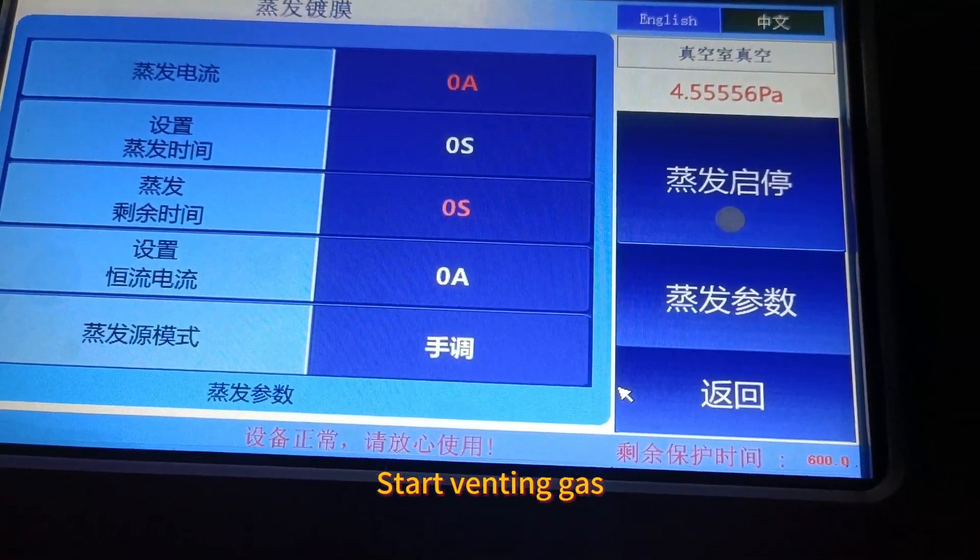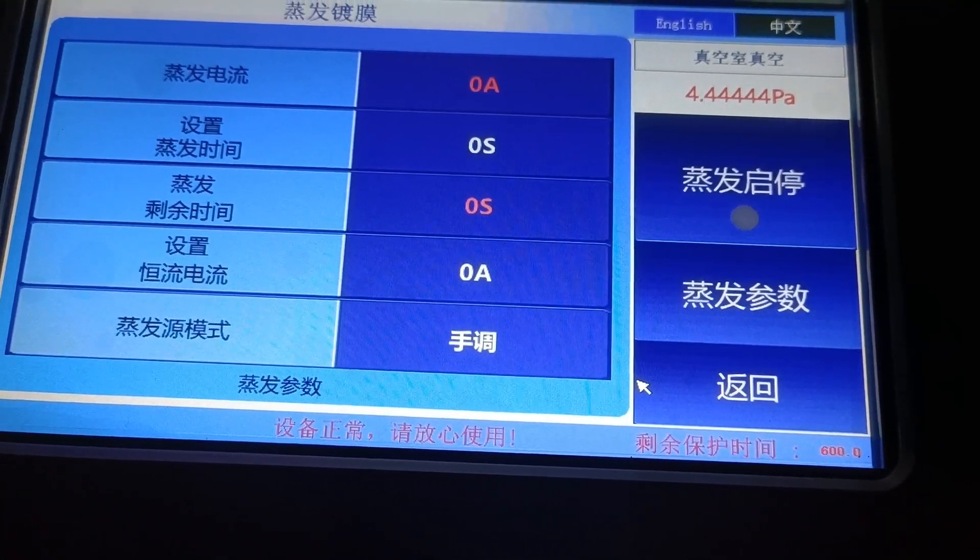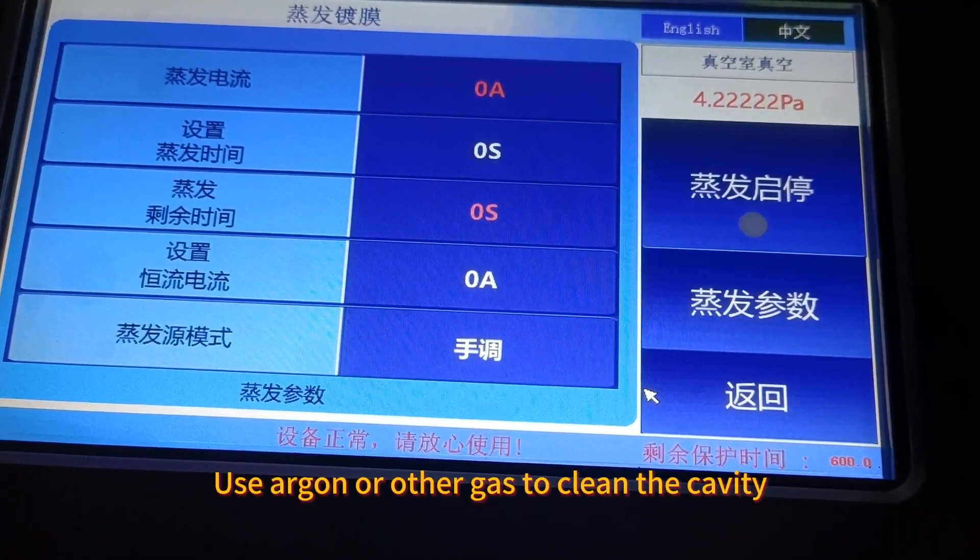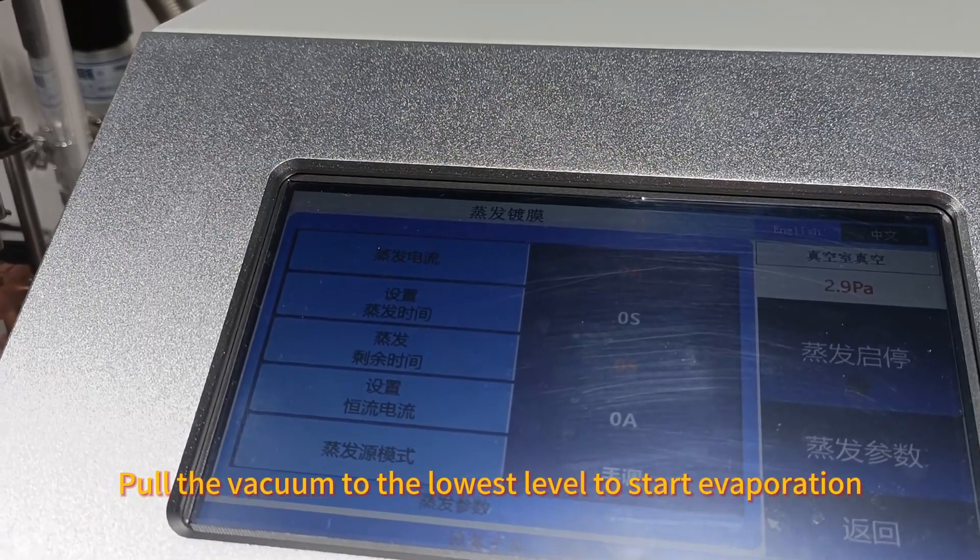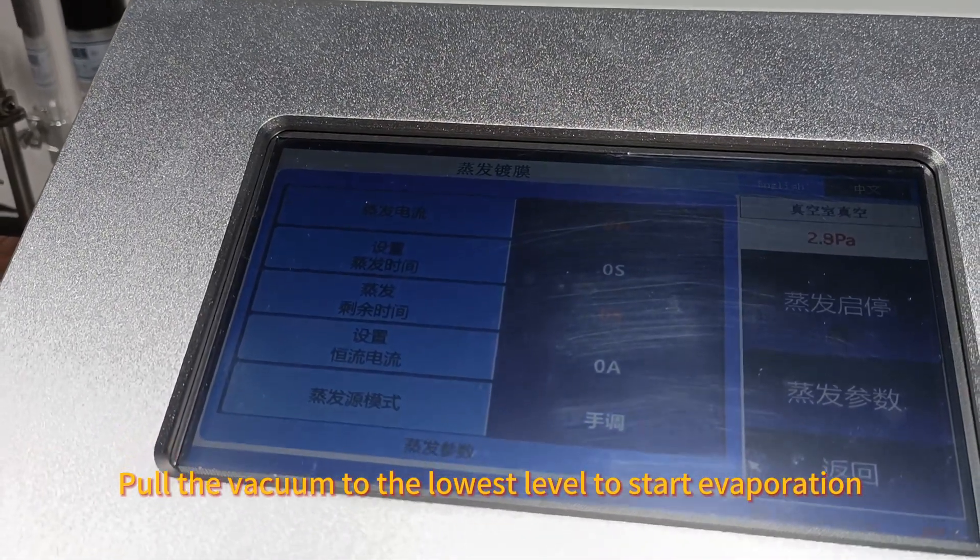Start venting gas. Use argon or other gas to clean the cavity, then pull the vacuum to the lowest level to start evaporation.